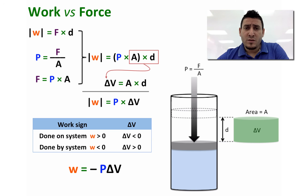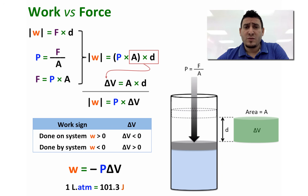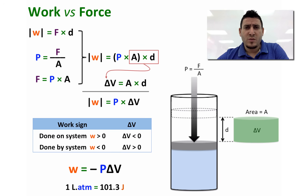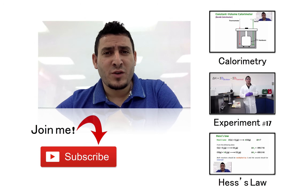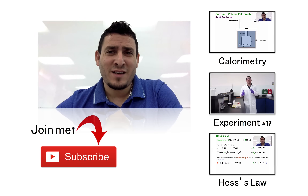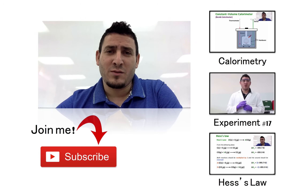When you evaluate this expression, the answer will be in liter·atmosphere. To convert liter·atmosphere to joules, use the relationship: 1 liter·atmosphere equals 101.3 joules, since energy must be expressed in joules. I hope this video was helpful. Please like, share, and subscribe, and I will see you next time.